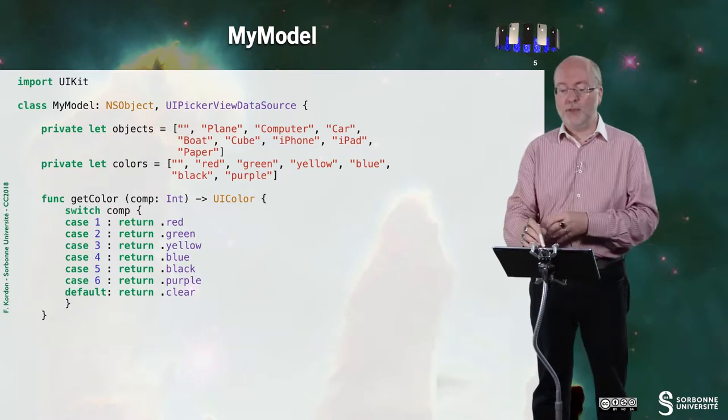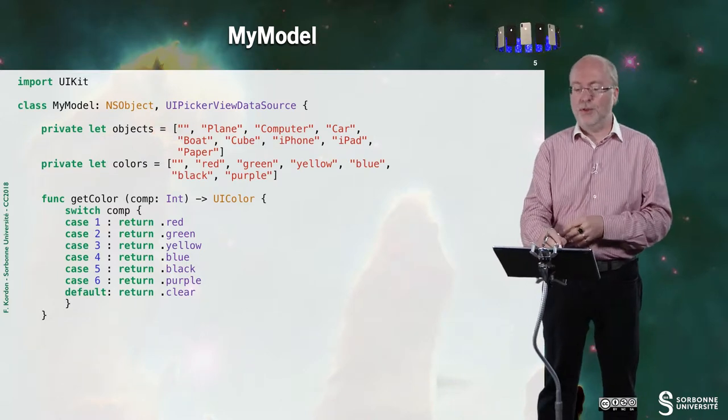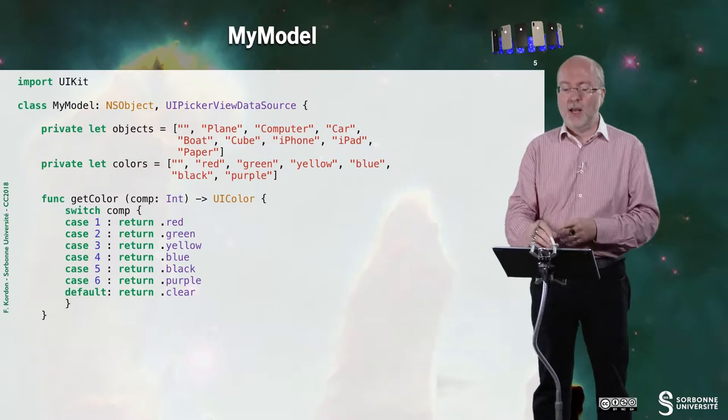One that lists objects. The first object is nothing. The second one that lists colors. And the first color is nothing. It corresponds to the transparent color.